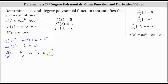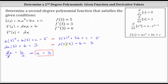Substituting three for a in the first equation, we have three times the square of three plus three b plus c equals five. Substituting three for a in the second equation, we have two times three times three plus b equals three. The second equation only contains b, so solving it: two times three times three is 18, giving us 18 plus b equals three, and subtracting 18 from both sides gives b equals negative 15.